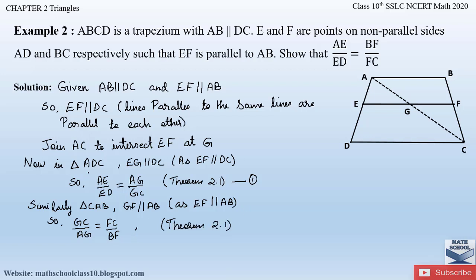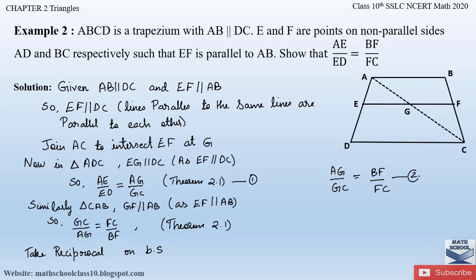From triangle ADC we have AG by GC equal to AE by ED. From triangle CAB we have GC by AG equal to FC by BF. Taking the reciprocal of the second equation, we get AG by GC is equal to BF by FC — call this Equation 2. The equality remains valid when you take the reciprocal of both sides.